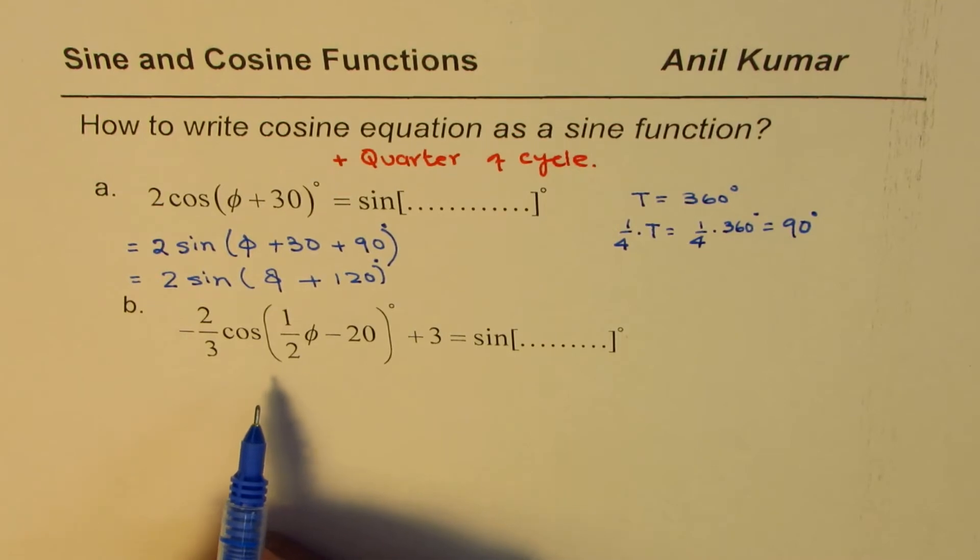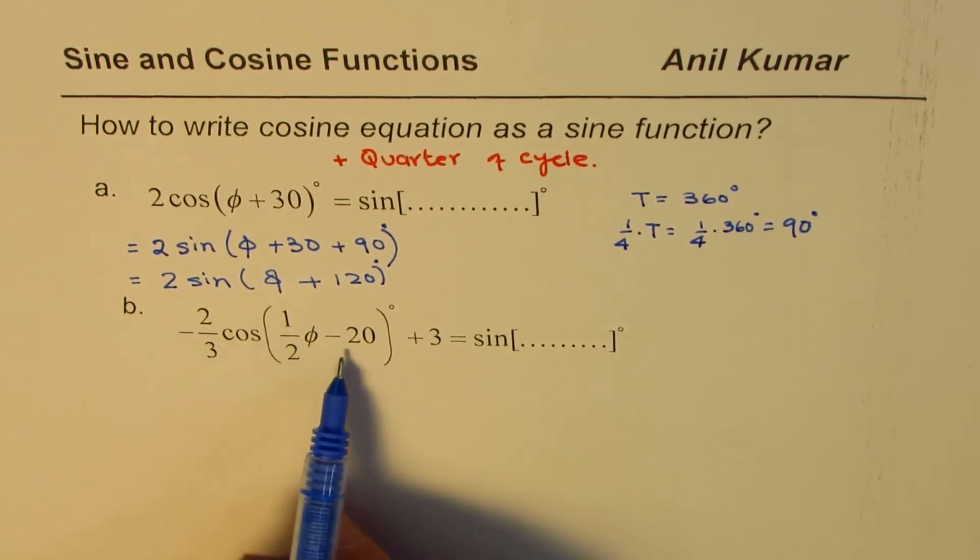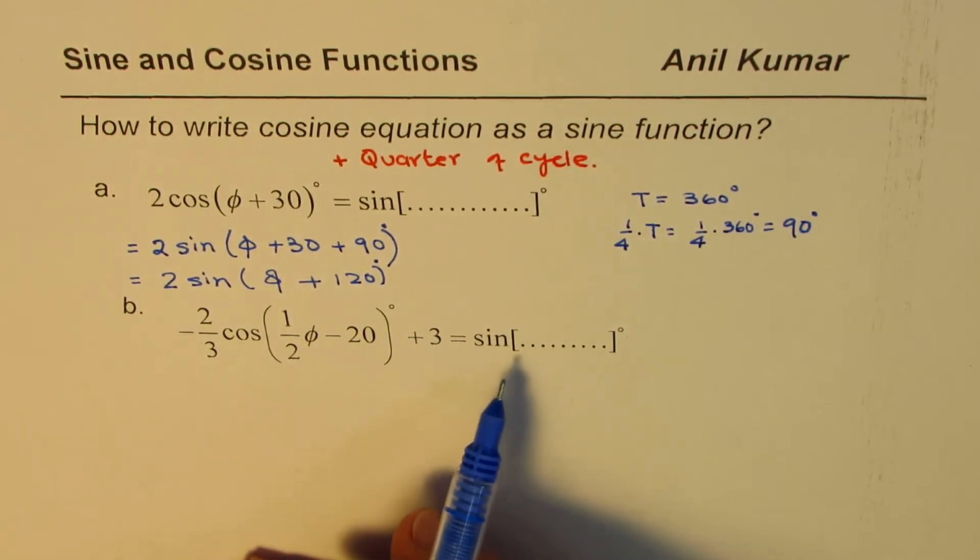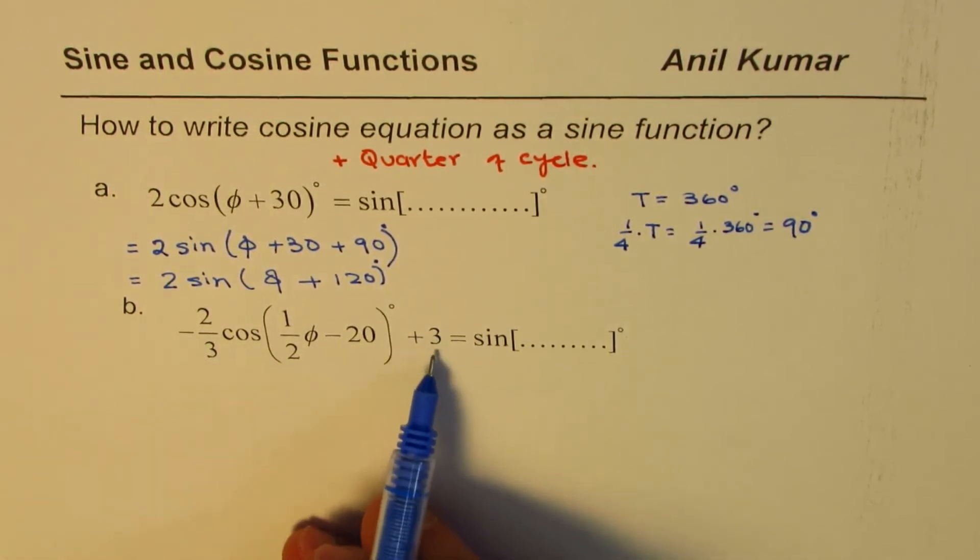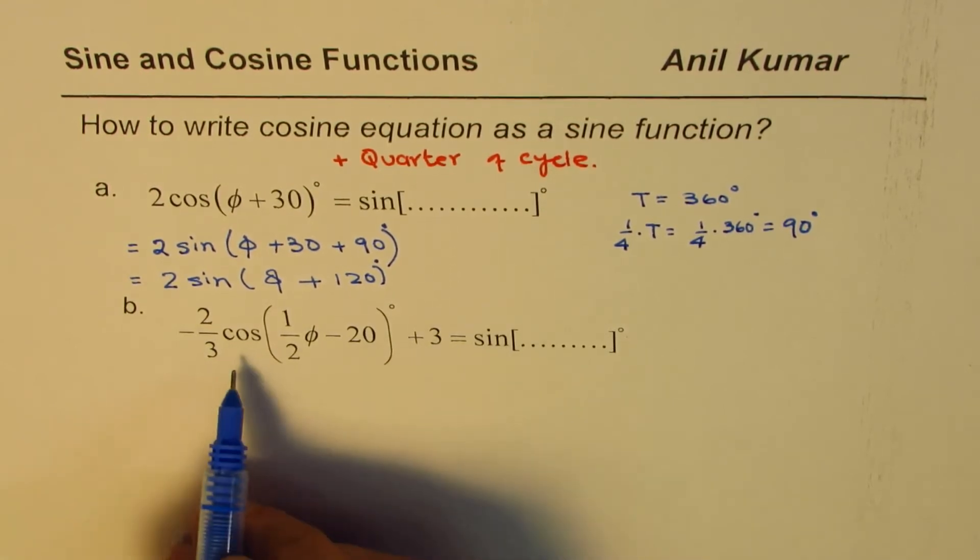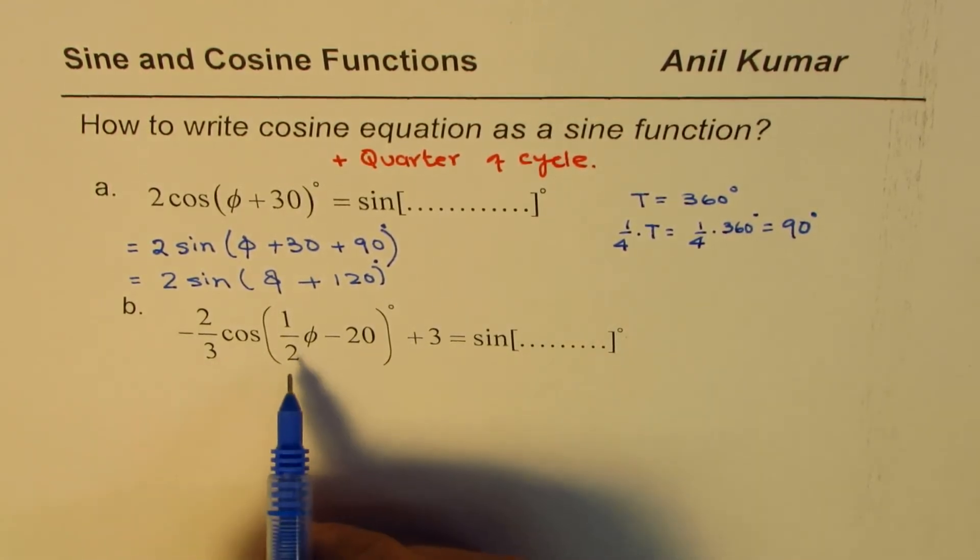In the second one it is -2/3 cos(1/2 φ - 20°) + 3 equals sine of what? Well the amplitude and the vertical translations remain the same. However we have to add quarter of this time period. Now what is the quarter of this time period?